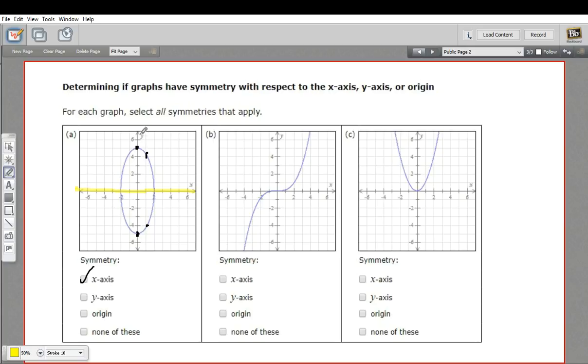Another type of symmetry is y-axis symmetry, and in this way, if you fold it across the y-axis, you'll have pieces that match up as well. And you can see that's also the case here. This figure has y-axis symmetry.